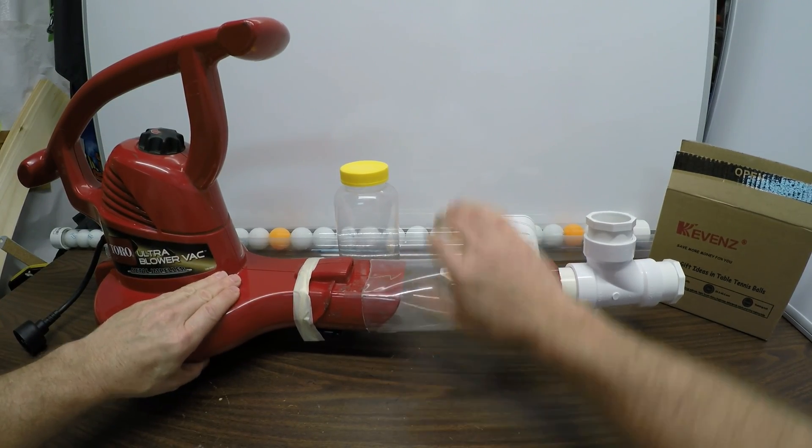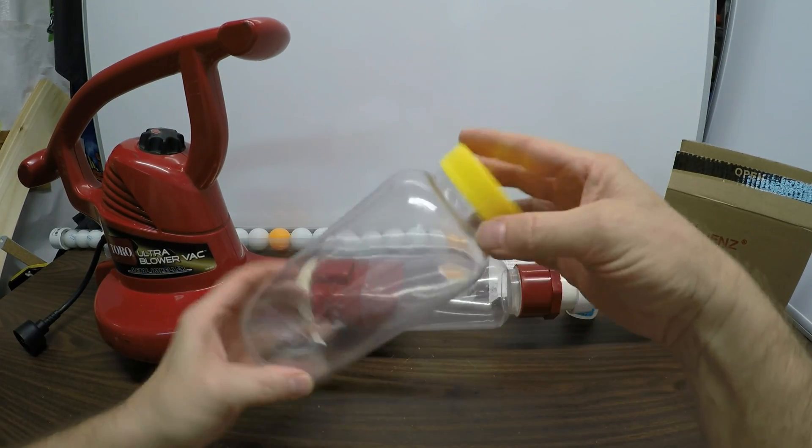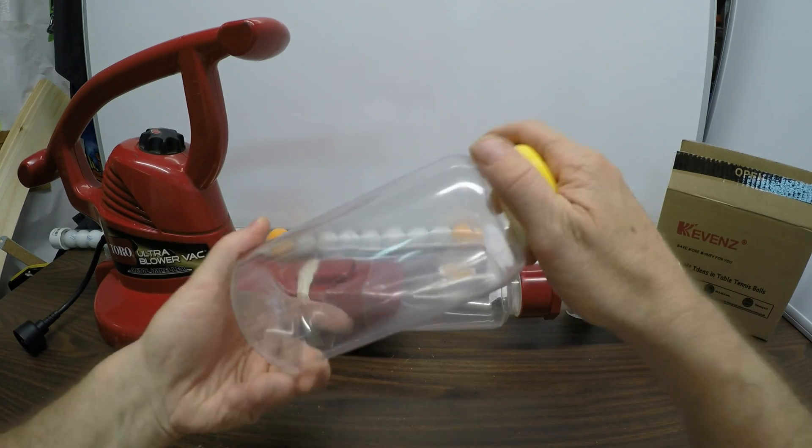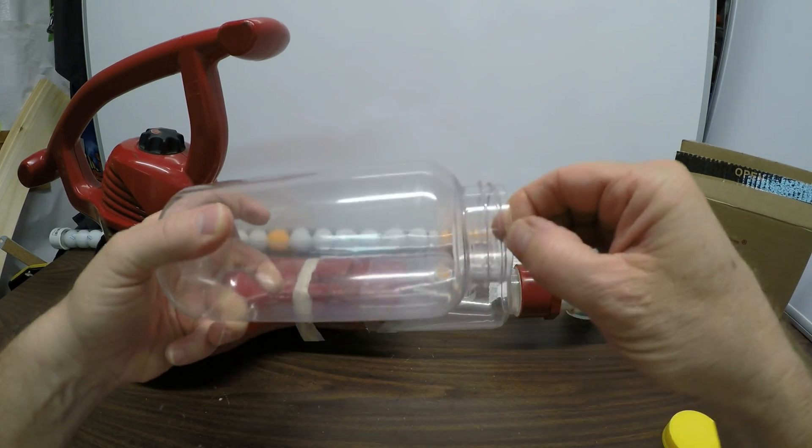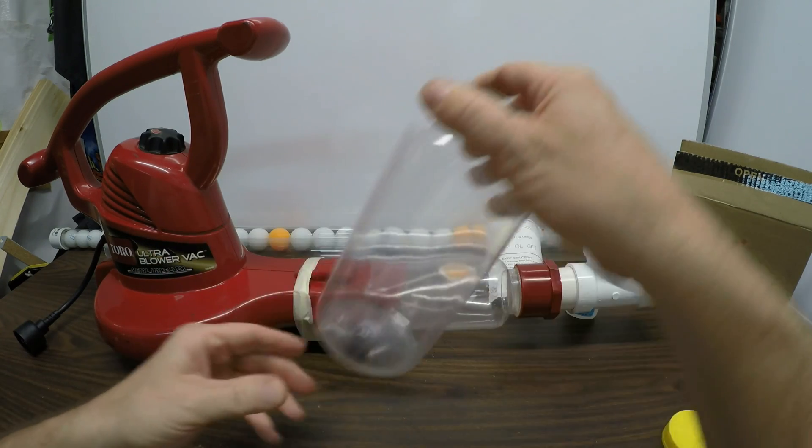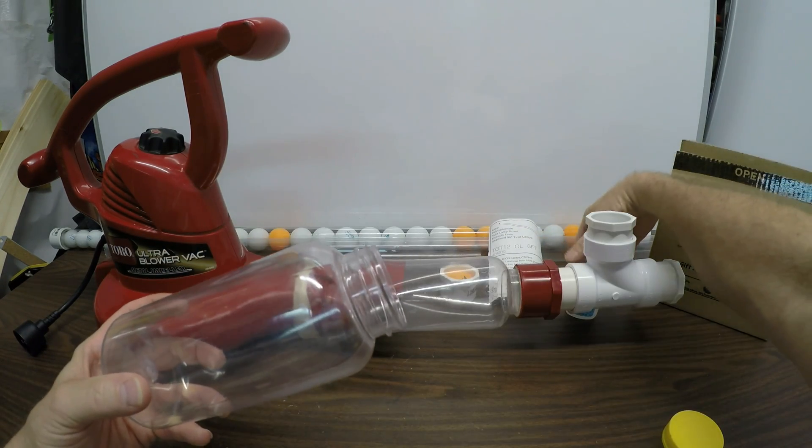The transition section is just a vitamin container for my kids' vitamins. And then what I did is I cut it down a little bit so that it would be flush. I can't show you that because I've already glued it.